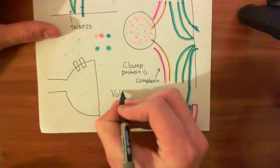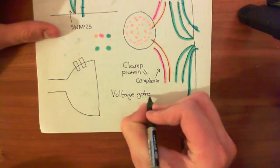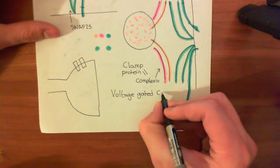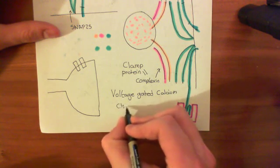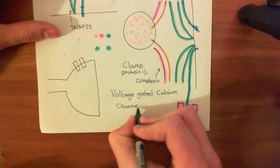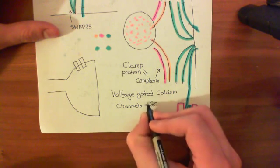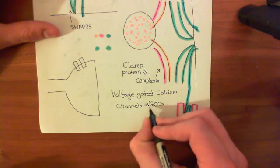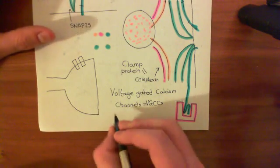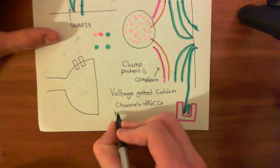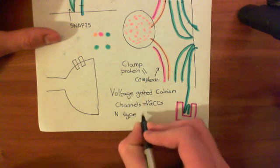These are specifically voltage-gated calcium channels of the N or PQ type. Voltage-gated calcium channels are often abbreviated to VGCCs. I just said that these voltage-gated calcium channels in the axon terminal are of the N type or PQ type, and I want to try and give you some intuition for what that actually means.